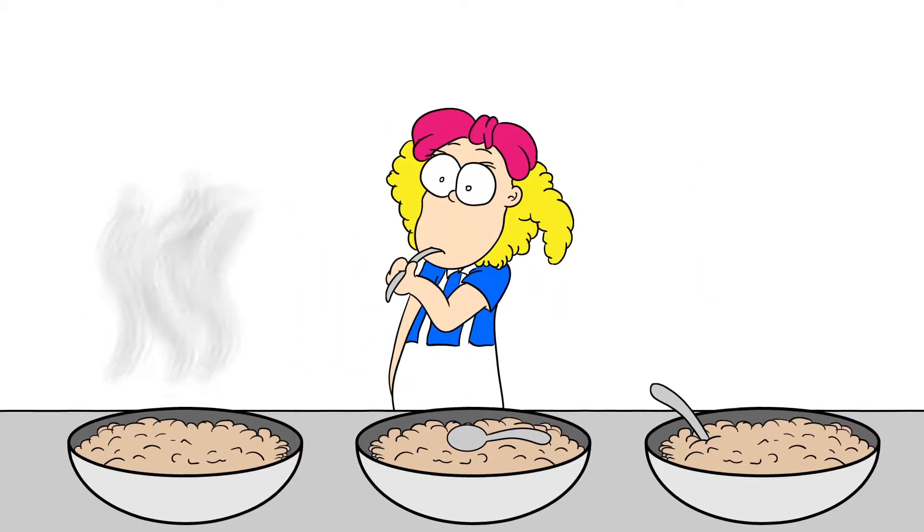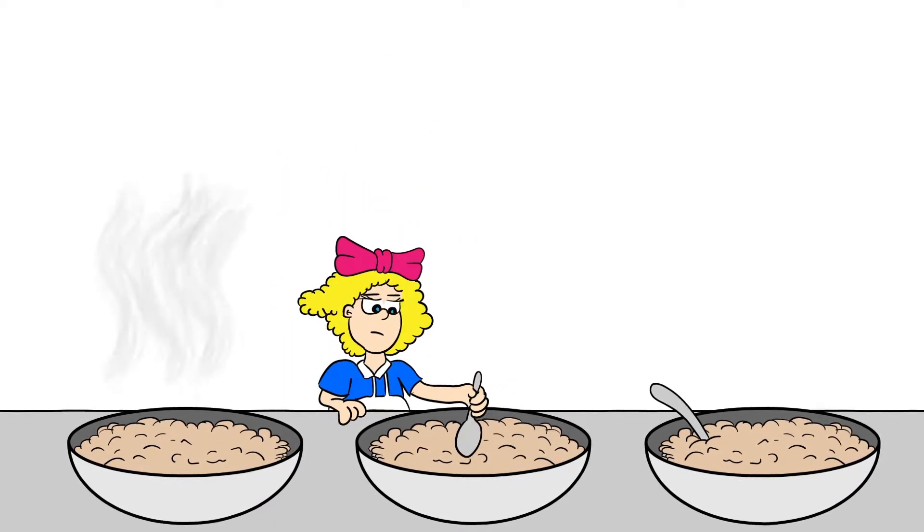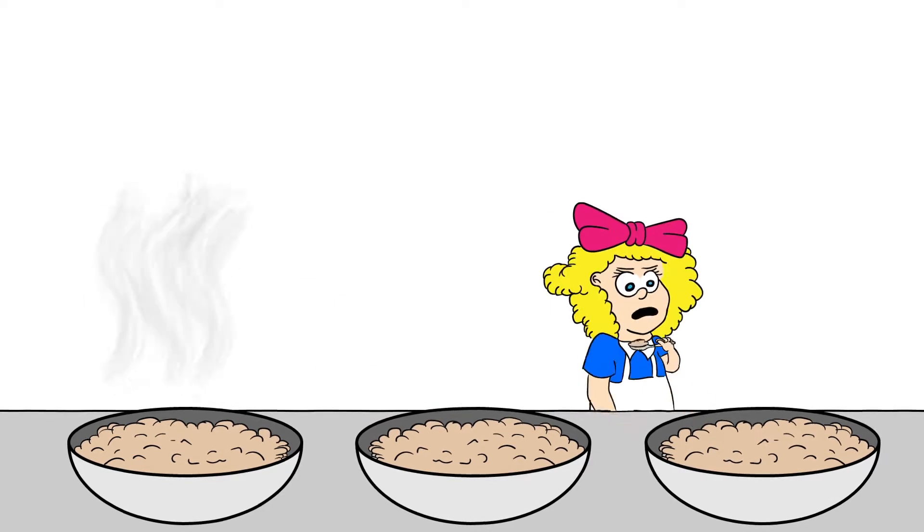She tried the first bowl, and it was simply way too hot. So she moved to the second bowl, which had been sitting there too long, and found it was cold. Not quite done with committing theft, Goldilocks tried the third bowl of porridge, and it was just right as far as she was concerned.